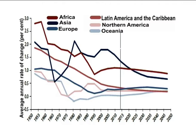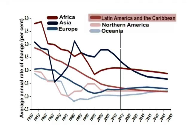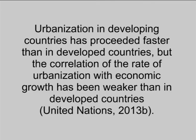Europe, North America and Oceania each experienced a period of stable urbanization, and overall their rate of urbanization has been slow over the last two decades. In Latin America and the Caribbean, the rate of urbanization has declined smoothly over the past six decades. Urbanization in developing countries has proceeded faster than in developed countries, but the correlation of the rate of urbanization with economic growth has been weaker than in developed countries.